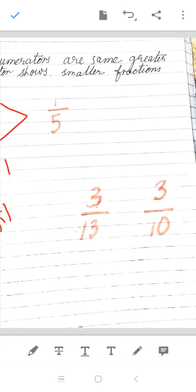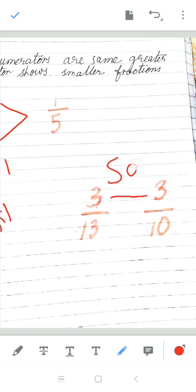3 upon 13, 3 upon 10. The numerators are same in this case. Smaller denominator shows a greater fraction. So which is greater? This is how we divide that.